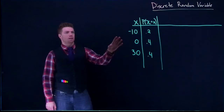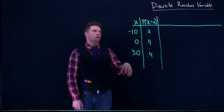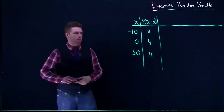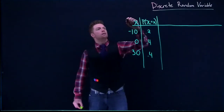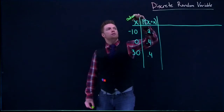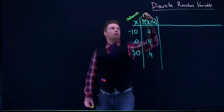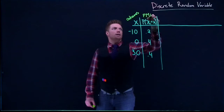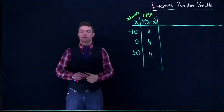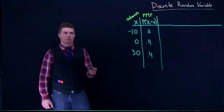We've got the beginning of one of these probability tables with our outcomes. Let's label these again — this is our probability mass function (PMF).